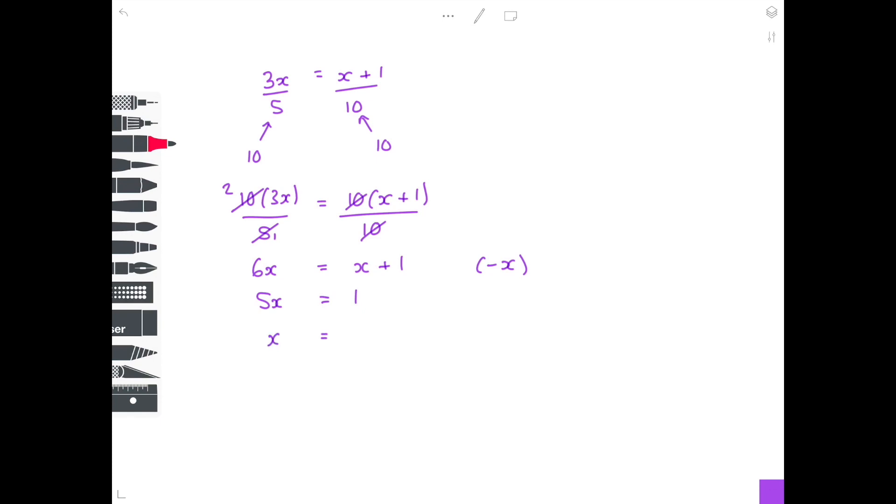And then how do you get x by itself? Well, you need to divide both sides by 5. And your final answer here is one-fifth. And don't forget, you can substitute in your answer into the original equation to check that it's right.